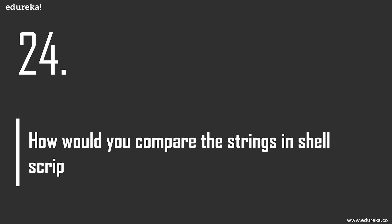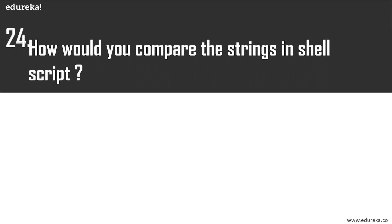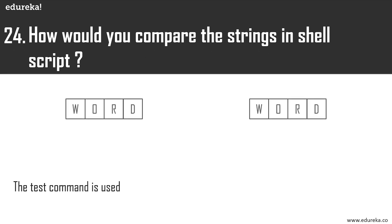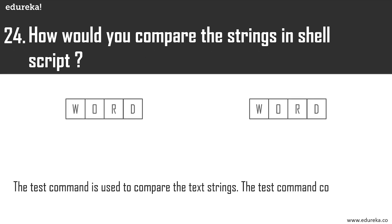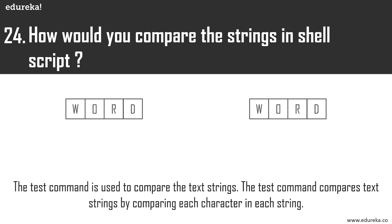How would you compare strings in a shell script? You use the 'test' command, which compares strings by comparing each character in each string. For example, if both strings are 'word_first', the test command checks the first character 'w', then 'o', and so on. Once all characters match, it declares them to be the same string.